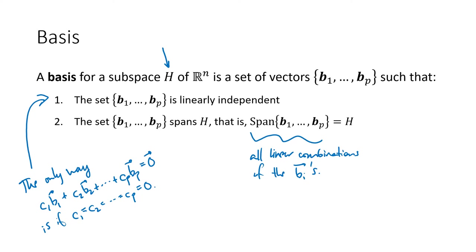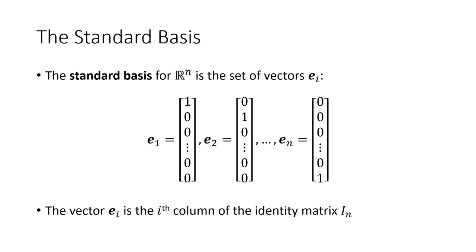Understanding what a basis is and how to work with it is really important for dealing with subspaces — for example, the null space and the column space that we talked about in the previous two lectures. One example of a basis we've already seen is the standard basis for Rn. In this case, the subspace H is all of Rn — one sort of boring example of a subspace is when your subspace is everything.